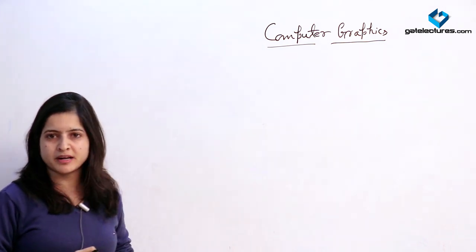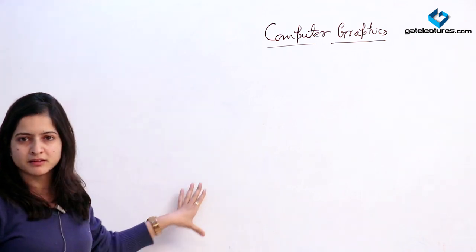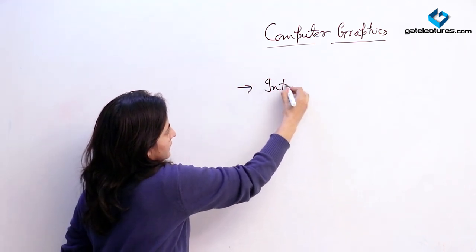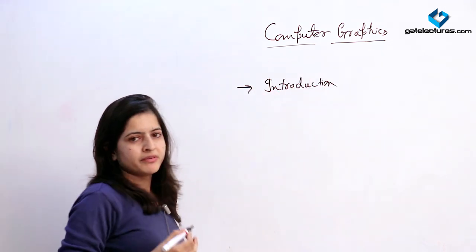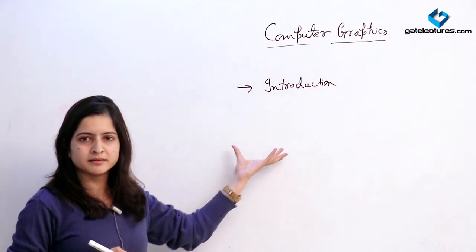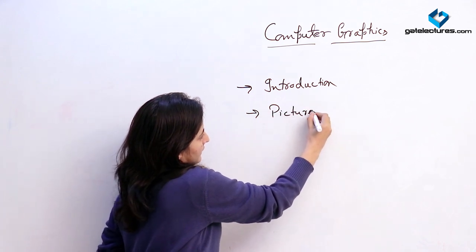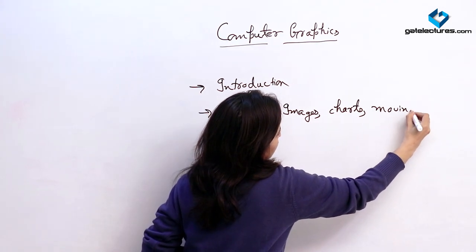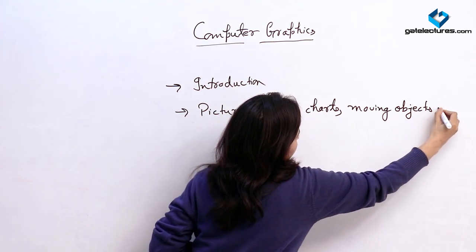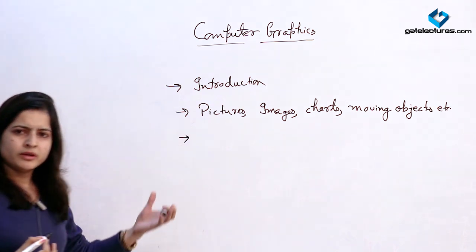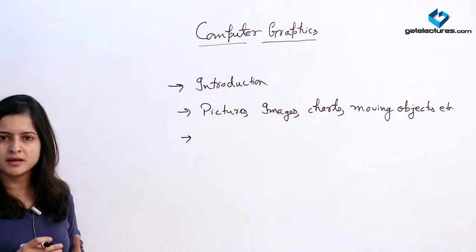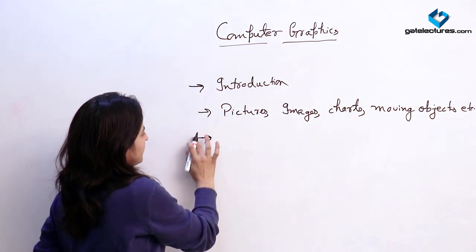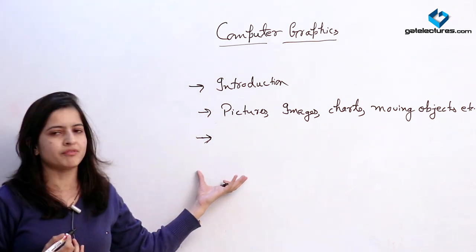Today we are going to start with the basic introduction of computer graphics. We will see the basic terminology related to computer graphics and the terms which we are using while we go through all the topics. Computer graphics is right now a most important part in computer science, and in this we are dealing with pictures, images, charts, moving objects, etc. We are dealing with how the pictures are stored, how we are representing them, how we are storing them, and how they are appearing on the screen.